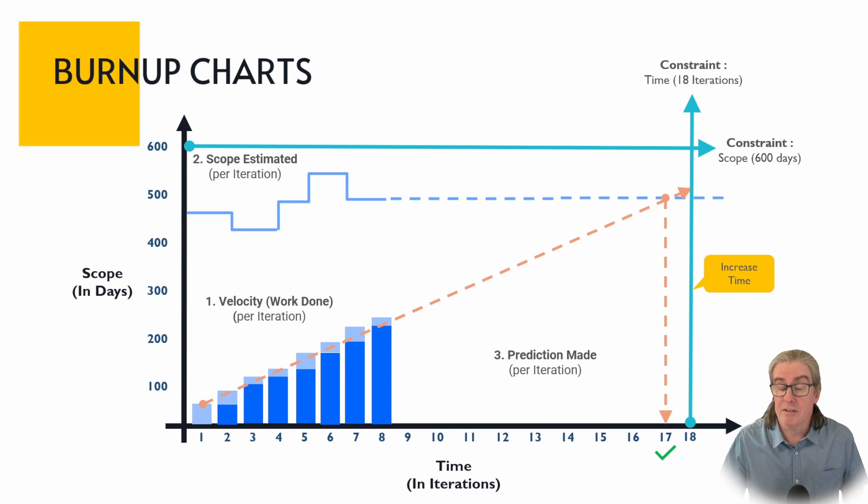Now the other thing that happens and typically this happens a lot is that the scope might not be able to be changed. The velocity, maybe there's not much more you can do with it. There's no more people that you can add and you've already tightened all your processes. So what can you do? Well you can push out time. So here we're saying that we're going to move out into iteration 18. And you're going to give it an extra month. And because of that, it looks like you're now going to be able to hit your dates.